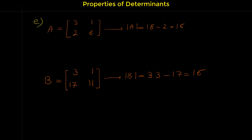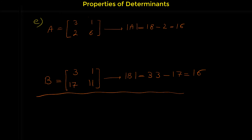It doesn't matter whether the matrix is 2×2, 3×3, 4×4, or 10×10 — for any matrix, if you add a multiple of one row to another row, or a multiple of one column to another column, the determinant does not change. Let me show another example.